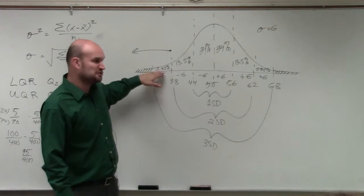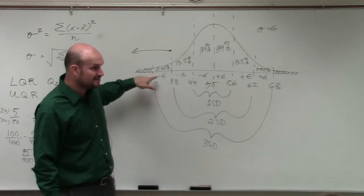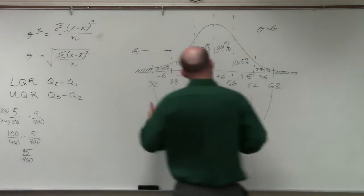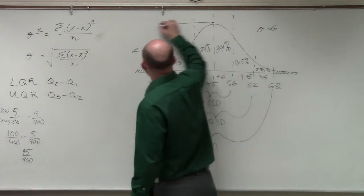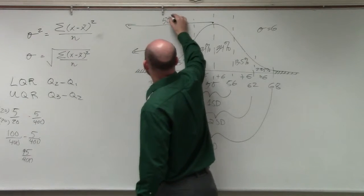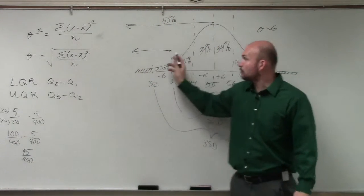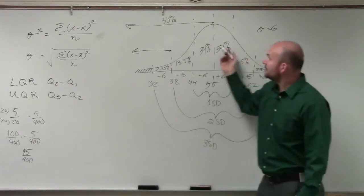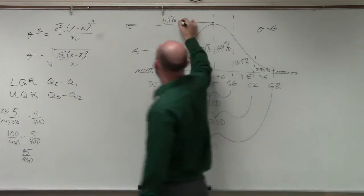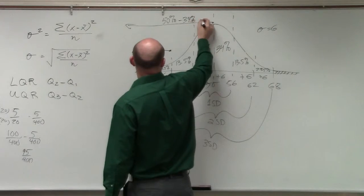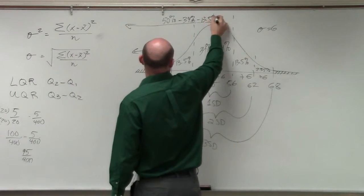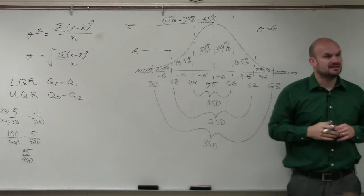So we just can't say, oh, it's 2.35, because we don't know these values. Now, just like in the last problem, we know 50% here from the mean over, that's 50%. So if we have all of this 50%, but we're only concerned about this portion, then we can take 50% and subtract 34% and subtract 13.5%. Does that make sense?